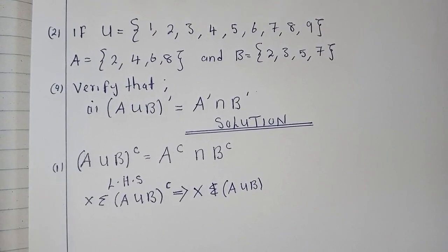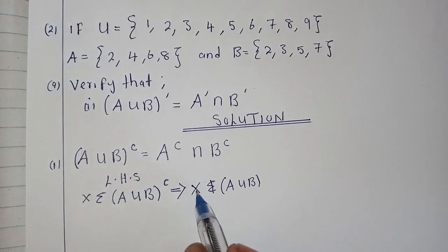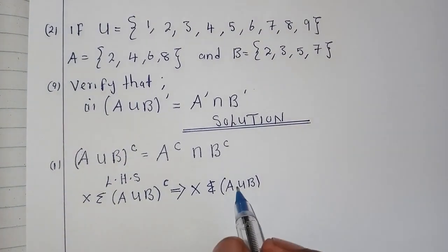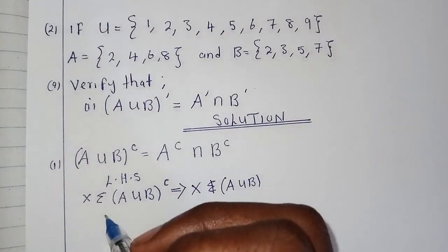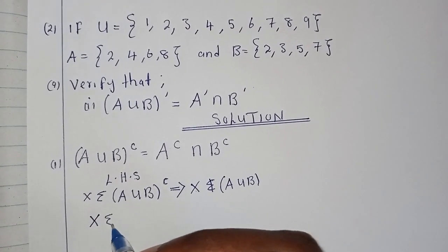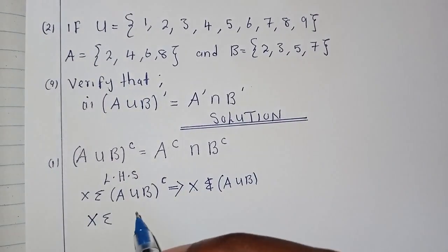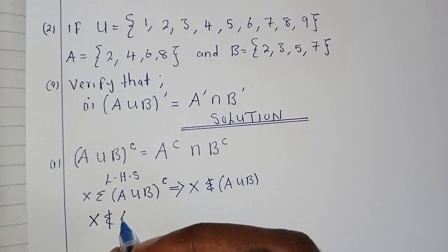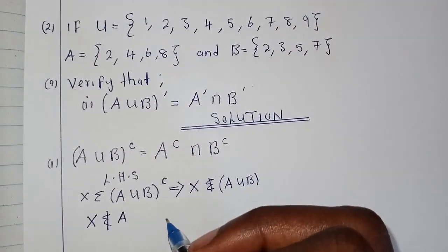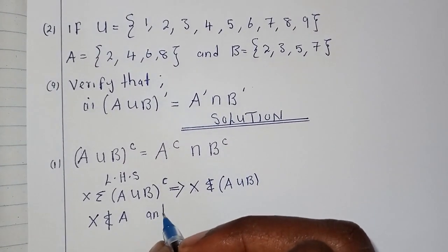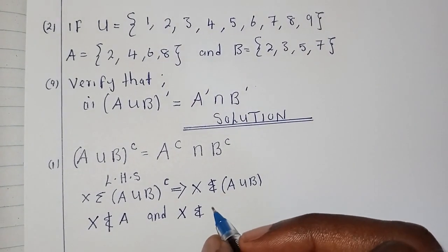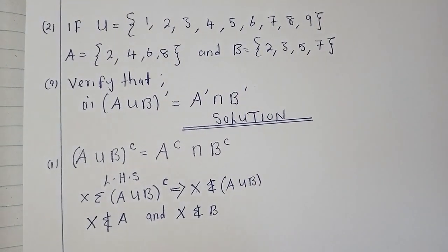Now if x is not a member of A union B, then that simply means that x will never be a member of set A, and this same x will never be a member of set B.